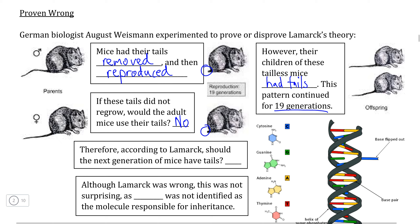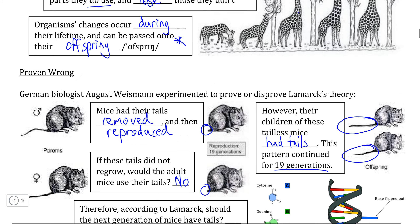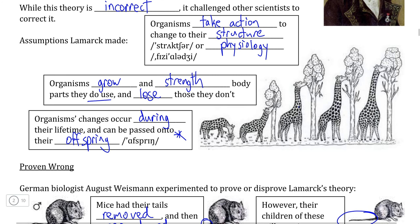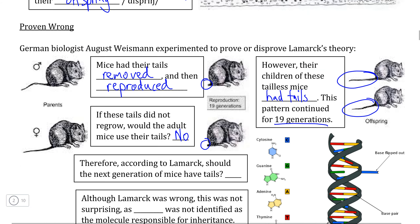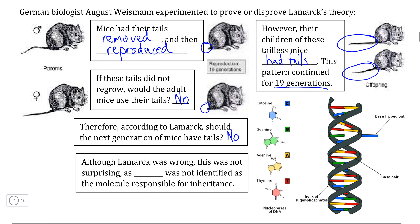This pattern didn't just continue for the first generation — when Weissmann repeated the experiment 19 times in a row, every single time the offspring mice clearly had tails. This clearly proved that Lamarck was incorrect, not just regarding the changes that occur within an organism's lifetime — which with some exceptions like muscle is generally untrue — but also with the idea that changes occurring within an organism's lifetime would be passed on to their offspring. Weissmann's relatively simple, albeit slightly unethical, experiment definitely proved that this does not occur.